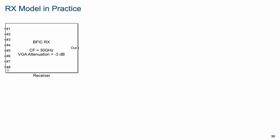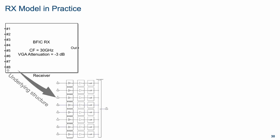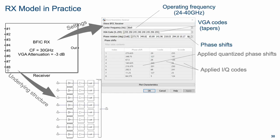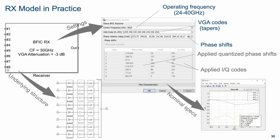The receiver model is very similar. Looking under the block, you see the same architecture. Double-clicking lets you configure the operating frequency, VGA, and phase shifts, and plot characteristics including noise figure for the receiver at the operating frequency of interest. Everything is frequency dependent, so as you stream signals you will also see the selectivity and dispersion of the S-parameters impacting the results.